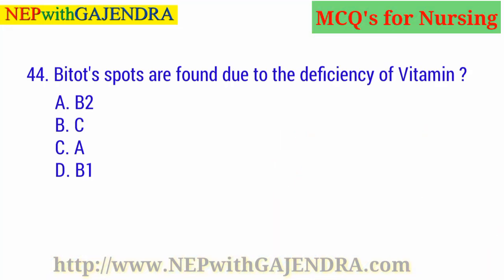Bitot's spots are found due to the deficiency of: A. Vitamin B2. B. Vitamin C. C. Vitamin A. D. Vitamin B1. The right answer is C: Vitamin A.